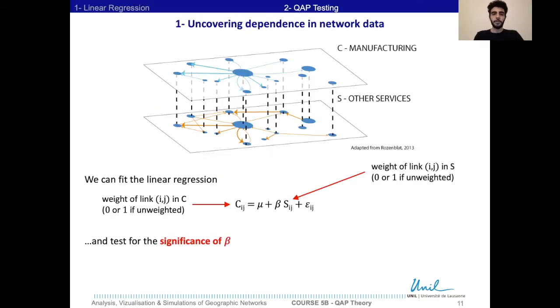We recall that in the first part of this lecture, we proposed to use a linear regression in order to check whether two layers of the network had their link structures correlated. We saw also that it was not adequate to use the usual t-test to test for the significance of the coefficient beta since the weights of the links were correlated if the links were connected to the same node.